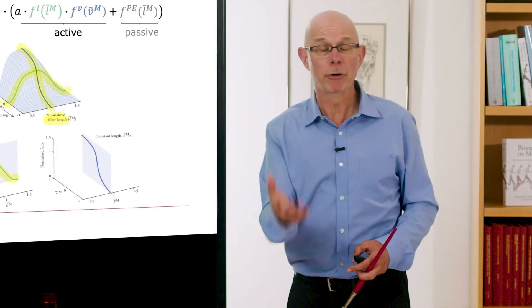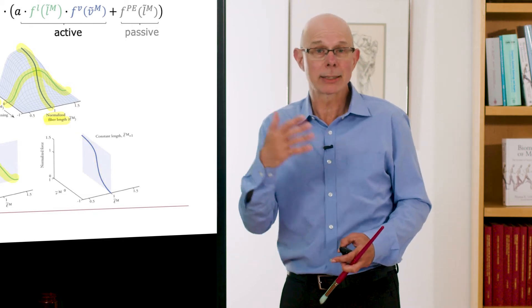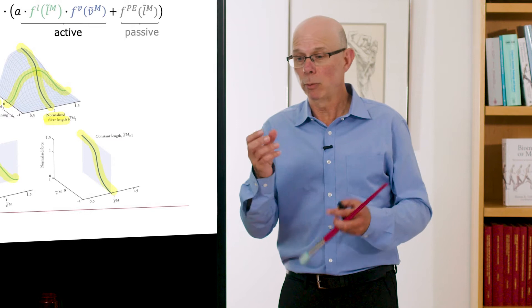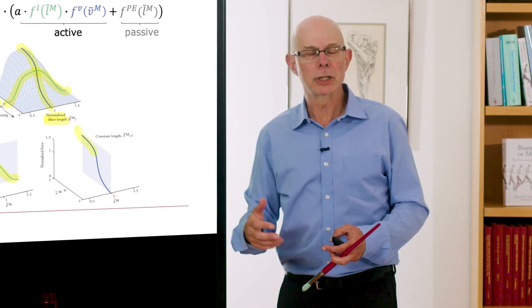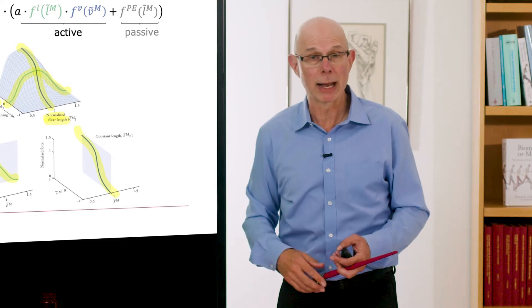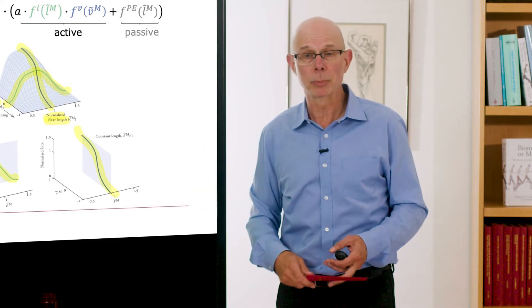Now, muscle is almost never maximally activated. It's usually somewhere less than that. In light activities, it might be just 10%. In serious exertion, different muscles will have different activations, but you can imagine 60, 70, 80, or even 100%.